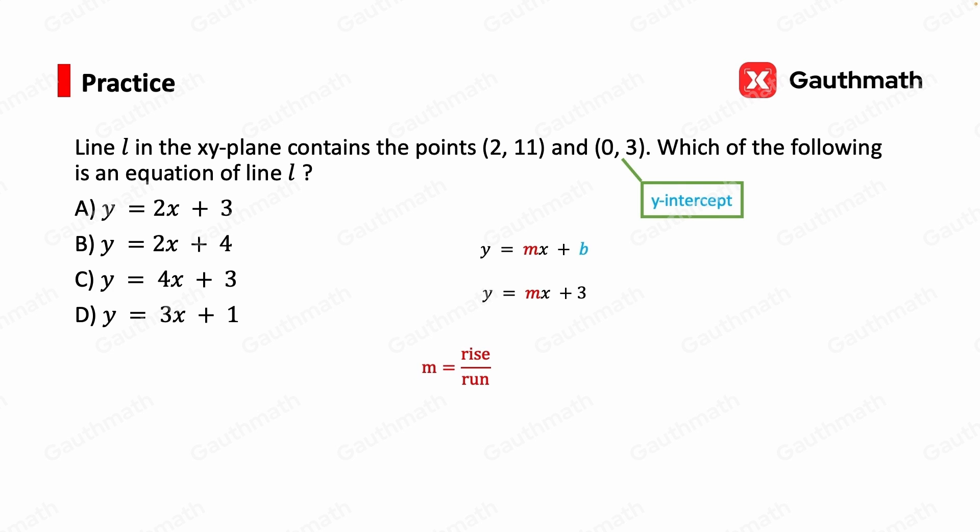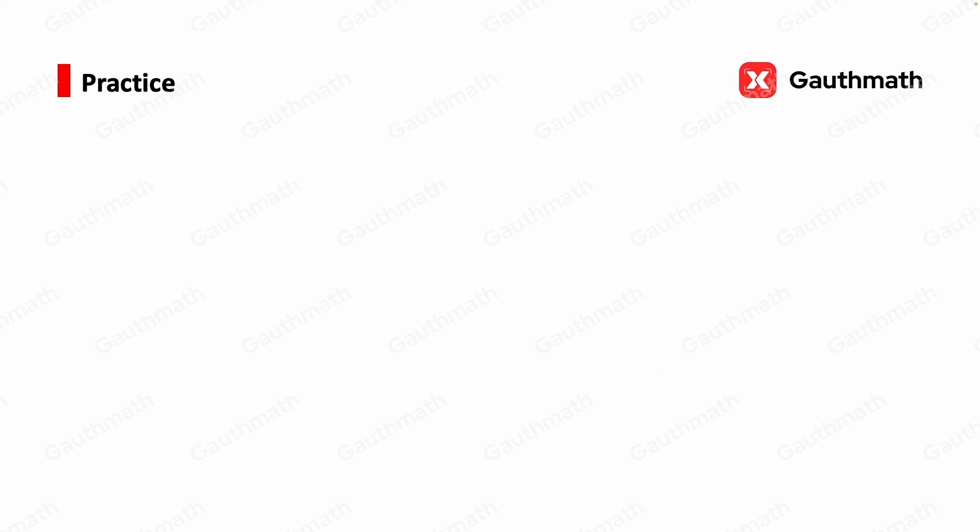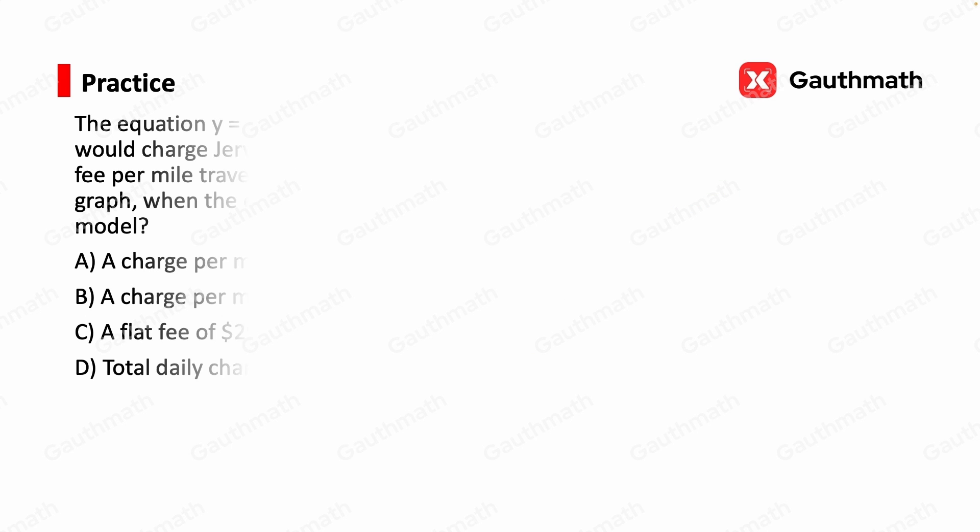So that gave us b equals to 3 in the slope-intercept form right away. And then we use the formula of the slope, rise over run. Slope equals y2 minus y1 over x2 minus x1. We can choose either point as point 1 or point 2. But just remember to plug in y2 minus y1 over x2 minus x1 correctly. And then we solve and we find the slope is 4. So in the slope-intercept form, it should be y equals 4x plus 3, C.